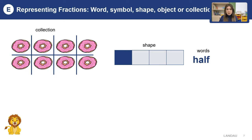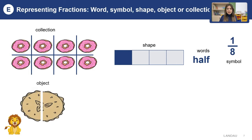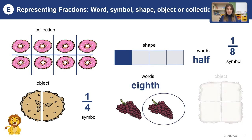We can represent fractions by symbols as well — one in the upper part and eight in the lower part shows one eighth. Now look at the objects: we can see one pie and it shows half of the pie. And remember the symbol one over four, and we can write fractions again by words and by objects as well.